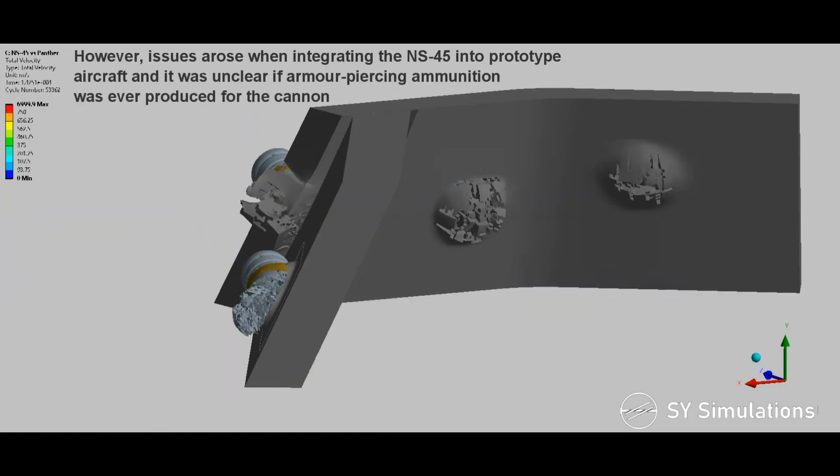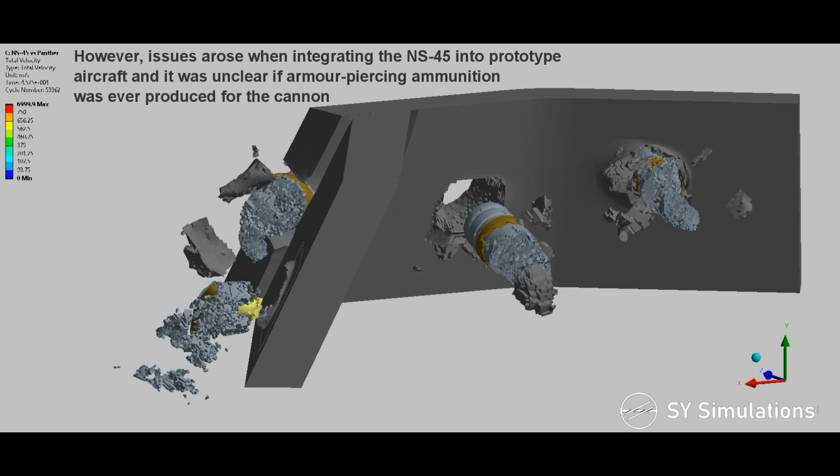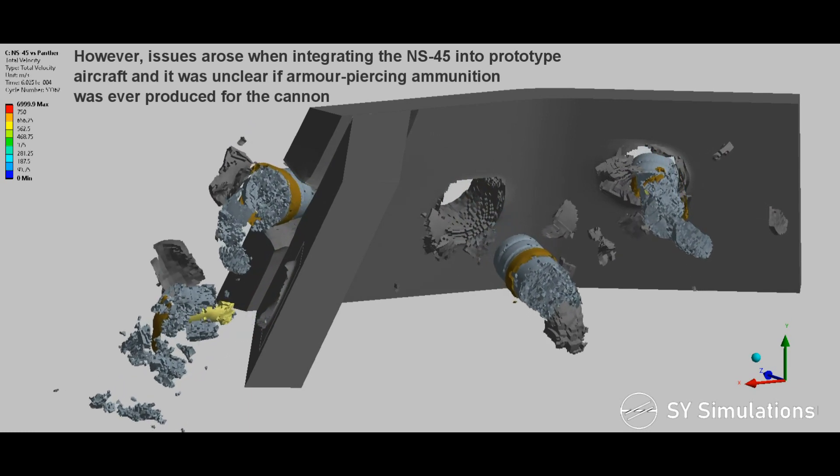However, issues arose when integrating the NS-45 into prototype aircraft and it was unclear if armor-piercing ammunition was ever produced for the cannon.